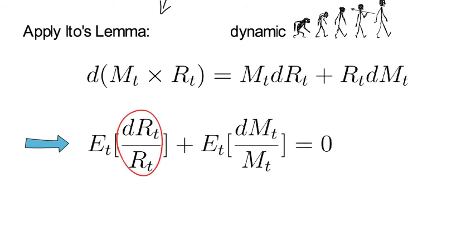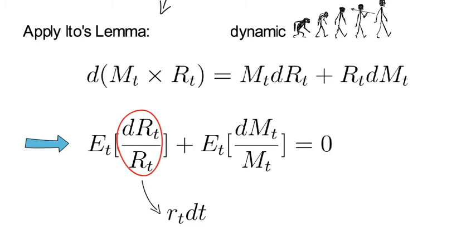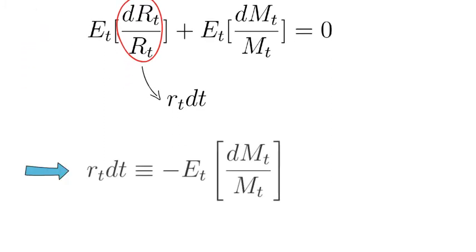Now as dR over R equals just the instantaneous short rate dt, we have found what we wanted to show. Namely rt dt equals minus the conditional expectation of dm over m.